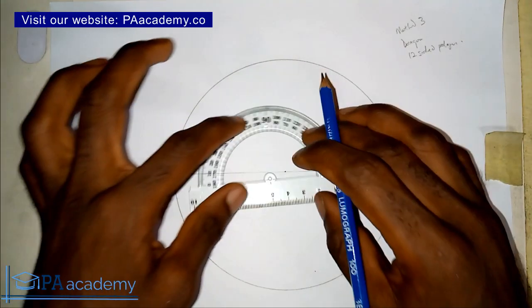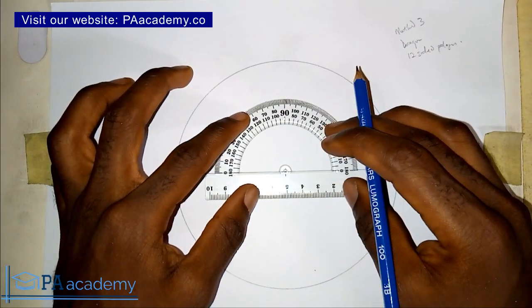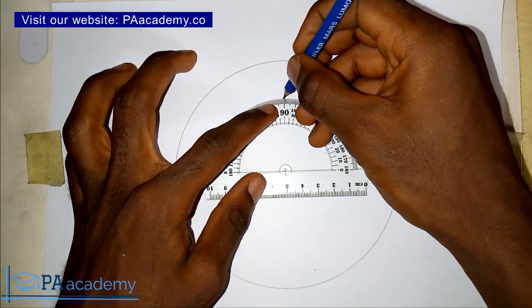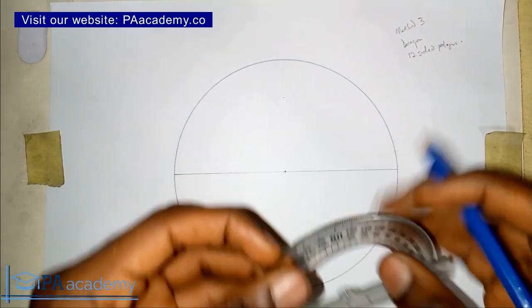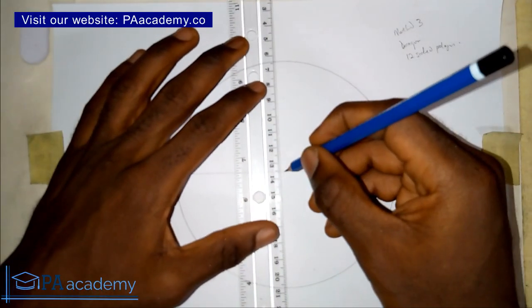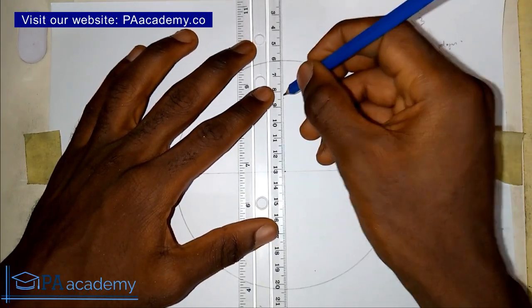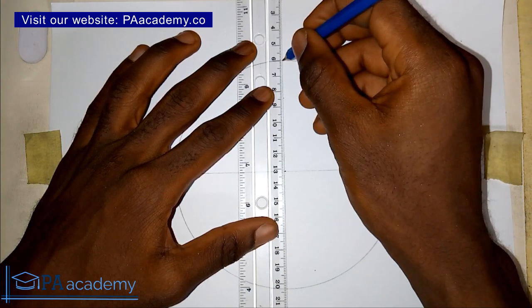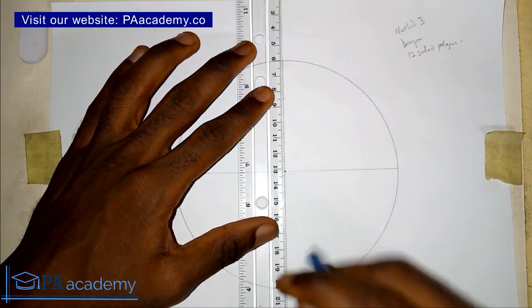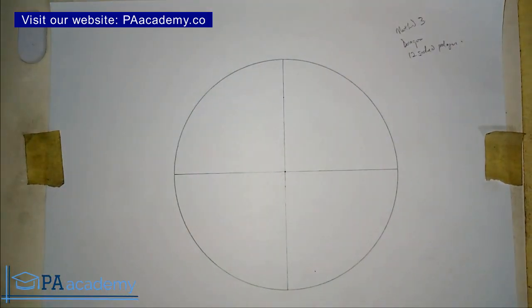I'll bring in my protractor just to make sure that I have it at 90 degrees. So I mark the 90-degree points. Now I have something like this.